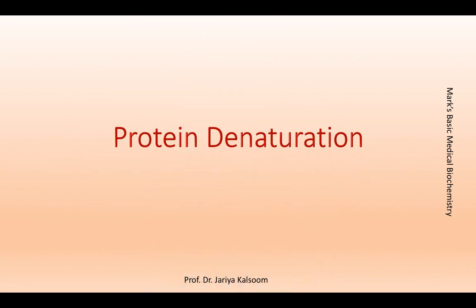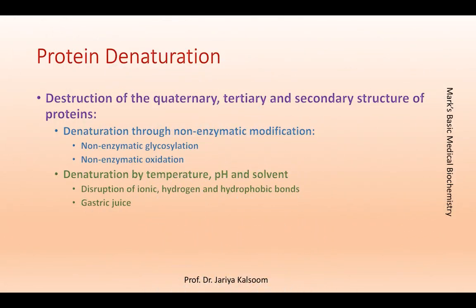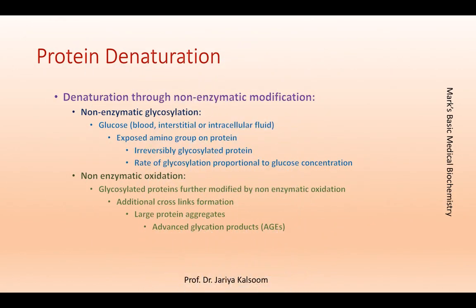Protein denaturation is the destruction of the quaternary, tertiary, and secondary structure of proteins. Protein denaturation mechanisms can be divided into two broad categories: non-enzymatic denaturation by glycosylation with subsequent oxidation and cross-linking, and denaturation due to disruption of hydrogen, ionic, and hydrophobic bonds due to changes in pH, temperature, or solvents.